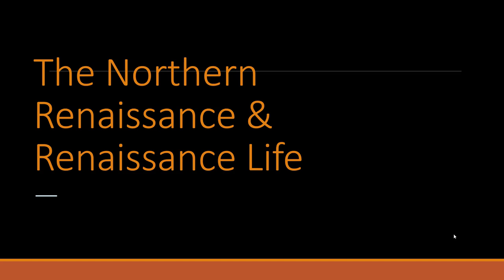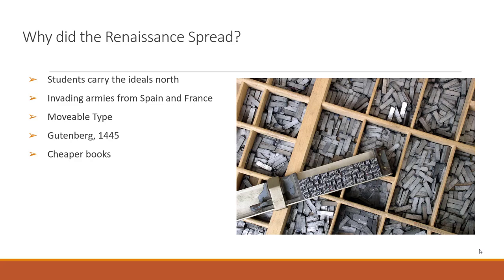Now we shift to the Northern Renaissance. The Southern Renaissance refers to Italy; the Northern Renaissance refers to other countries like England. Why did the Renaissance spread north? Students carried ideas north with them; invading armies from Aragon and France were influenced by the Renaissance while in Italy and brought those ideas home to Spain and France. We also see movable type emerge during this period, and the first printing press in Europe—the Gutenberg printing press—emerged in 1445, making books cheaper and more accessible throughout Europe.